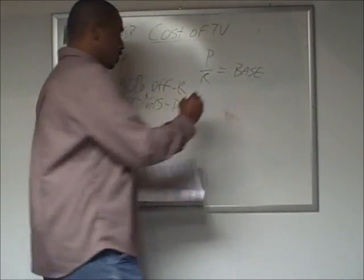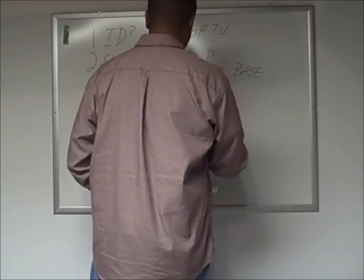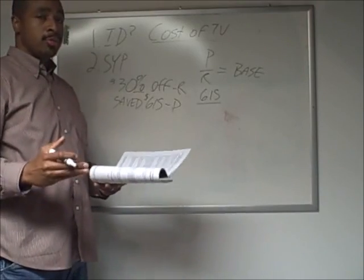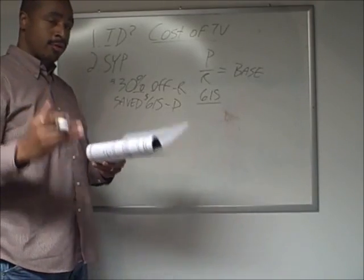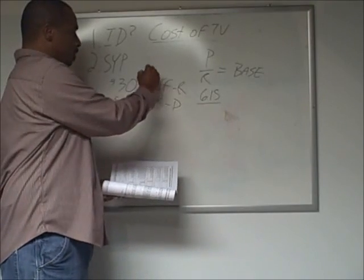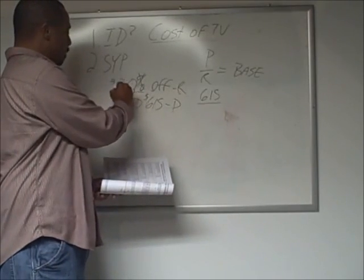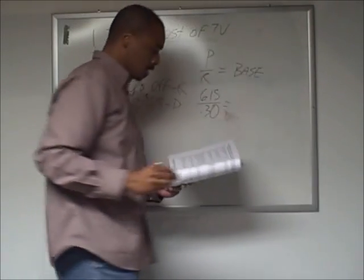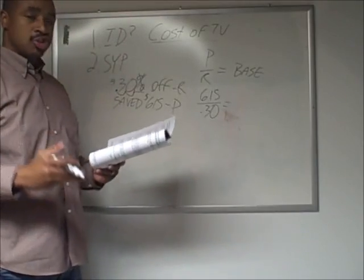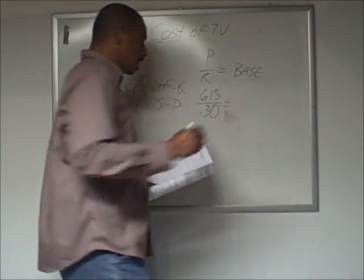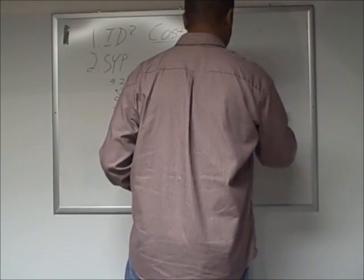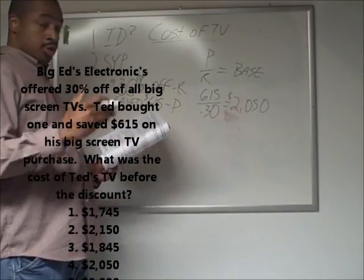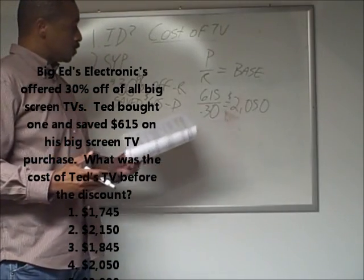We have the part: $615. We have the rate: 30%. We have to convert this percent to its number form — drop the percent sign and move the decimal place two spaces to the left. So 615 divided by 0.30 gives us our base. That gives us $2,050 — the original cost of the TV.